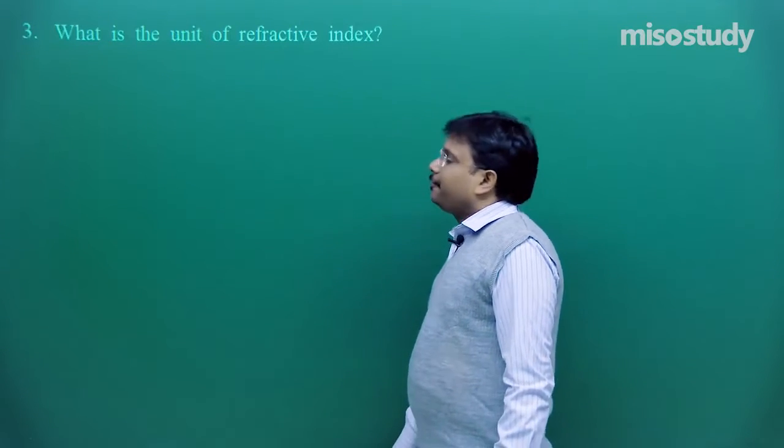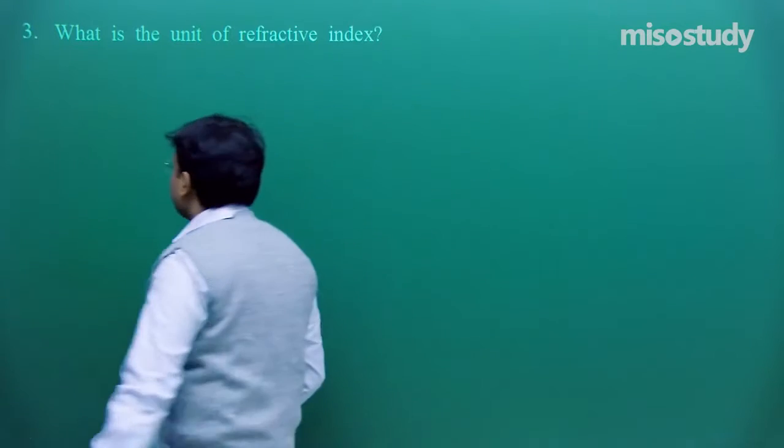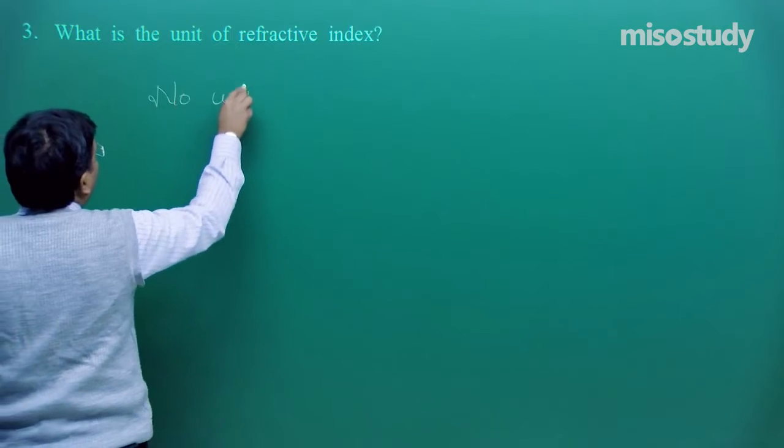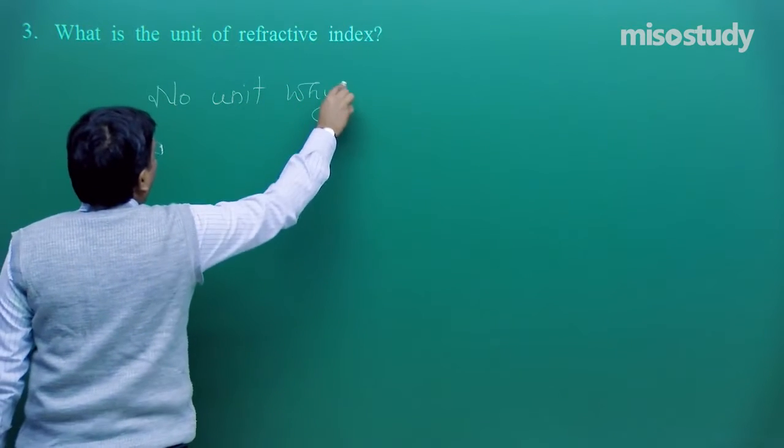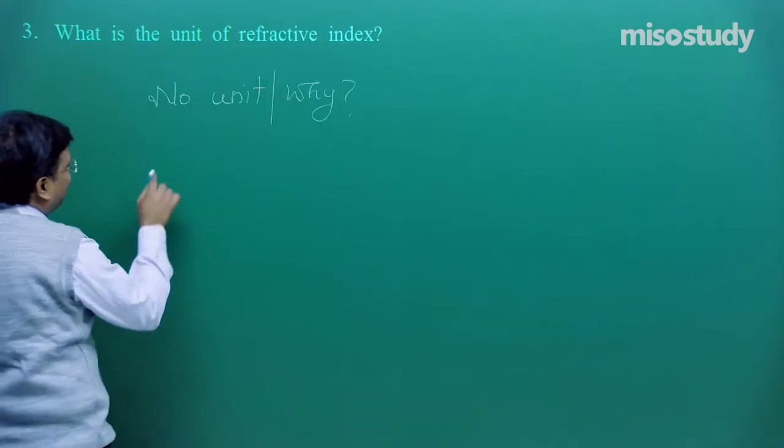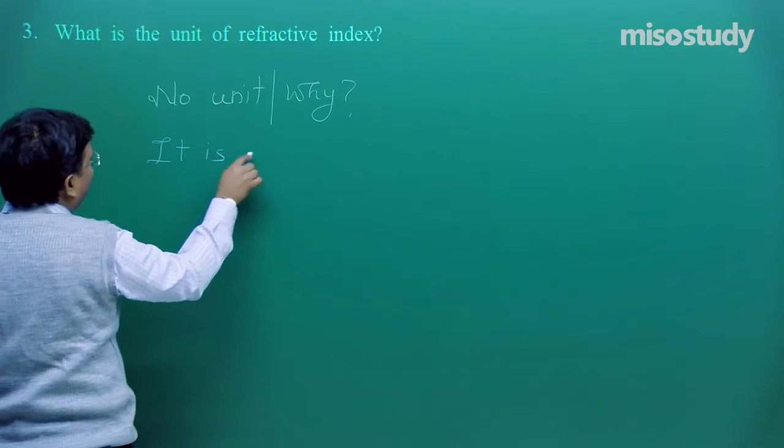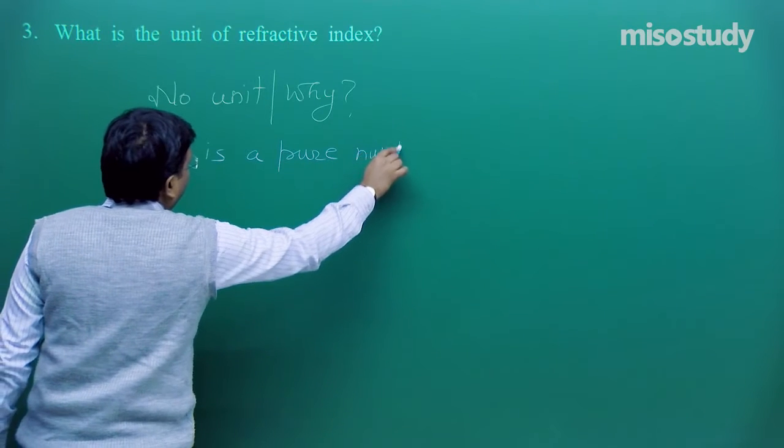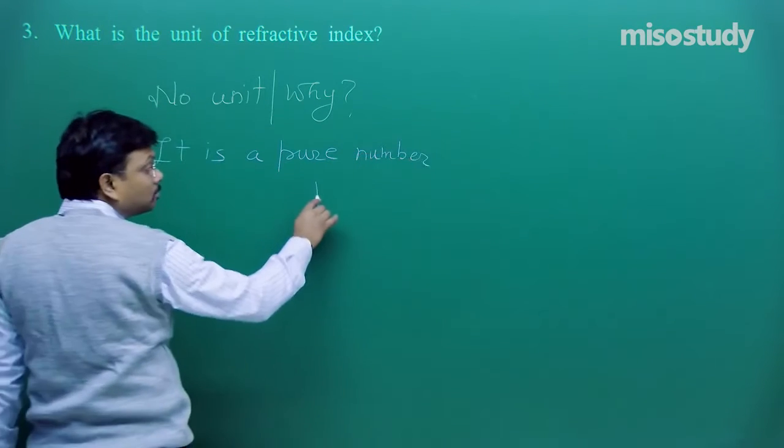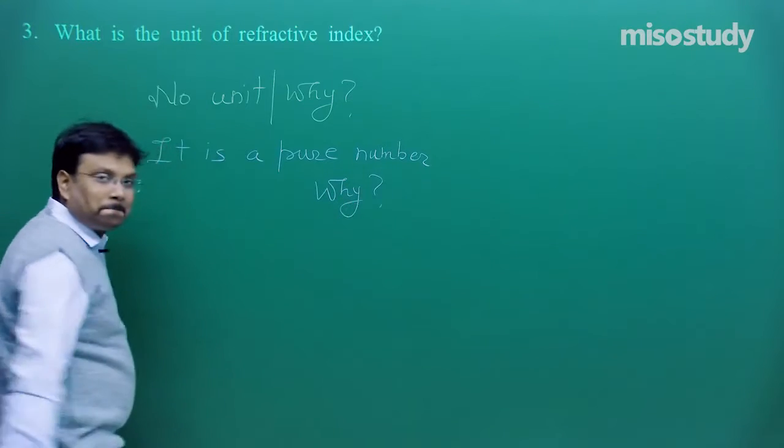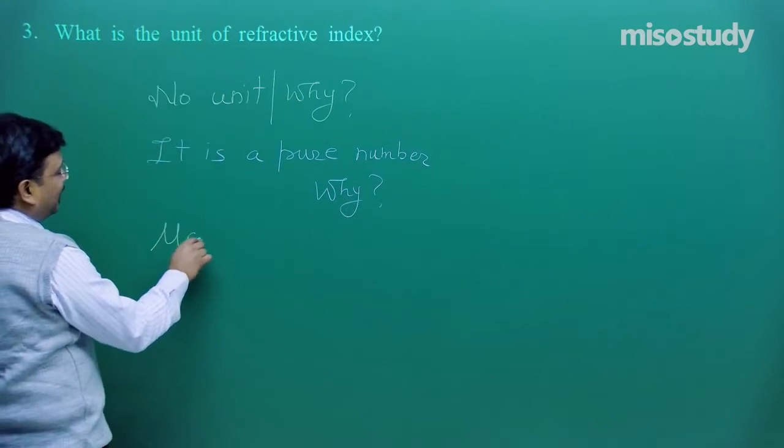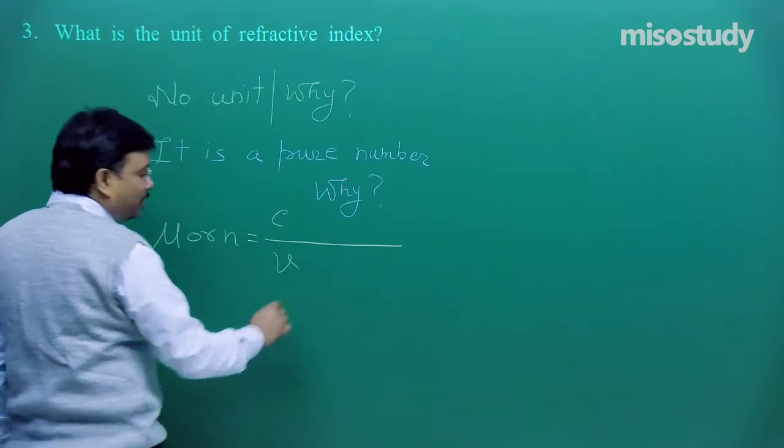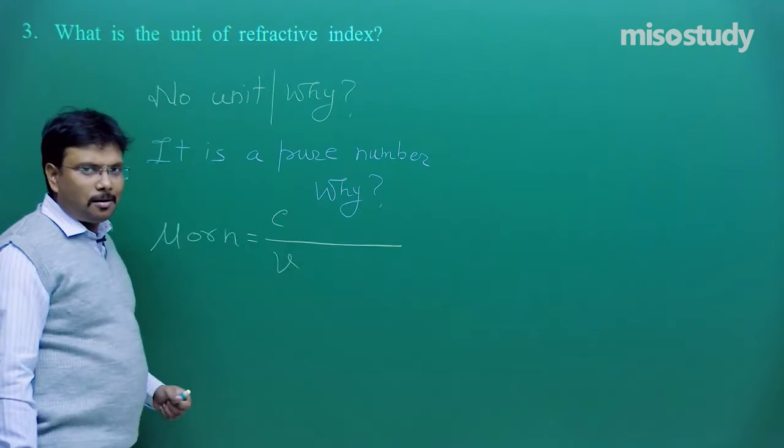What is the unit of refractive index? Well, no unit. Why? Because it is a pure number. Why?